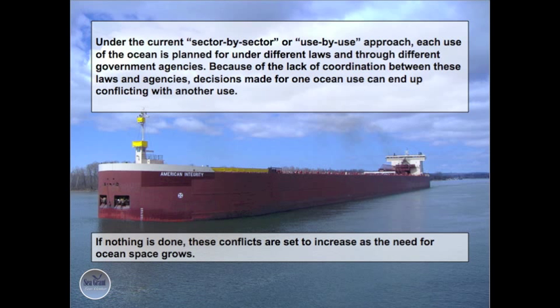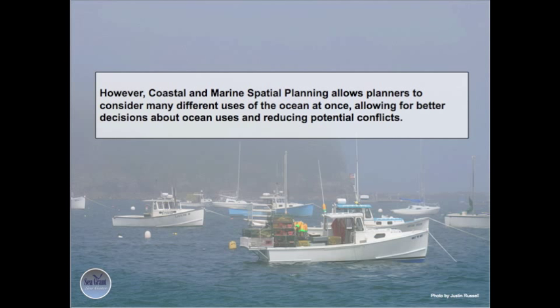Under the current sector-by-sector or use-by-use approach, each use of the ocean is planned for under different laws and through different government agencies. Because of the lack of coordination between these laws and agencies, decisions made for one ocean use can end up conflicting with another use. If nothing is done, these conflicts are set to increase as the need for ocean space grows. However, Coastal and Marine Spatial Planning allows planners to consider many different uses of the ocean at once, allowing for better decisions about ocean uses and reducing potential conflicts.